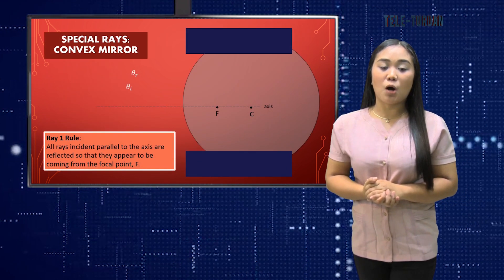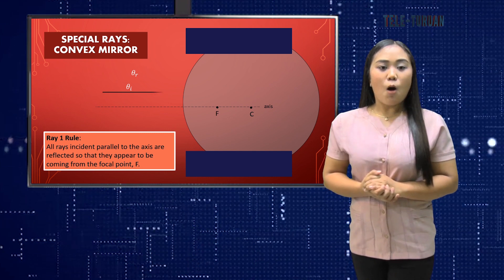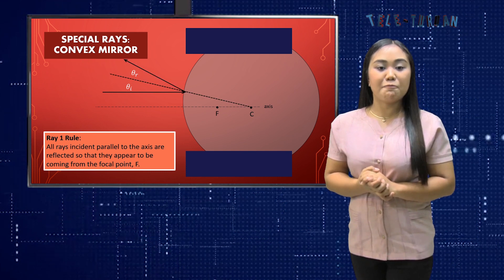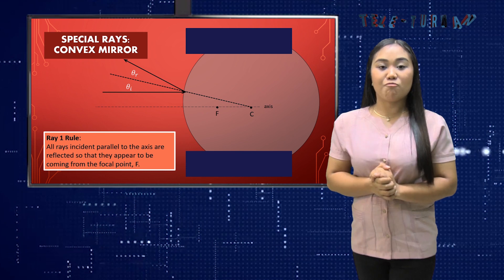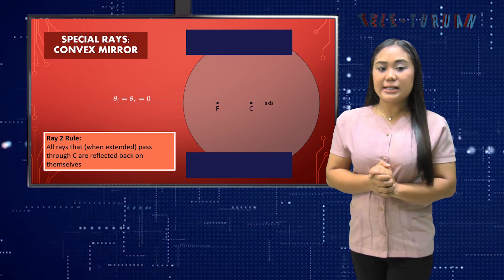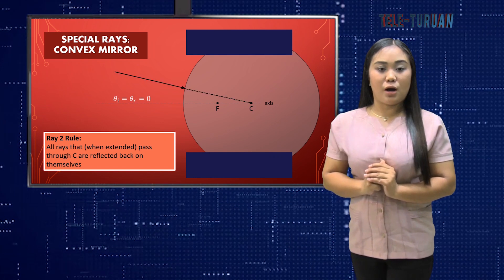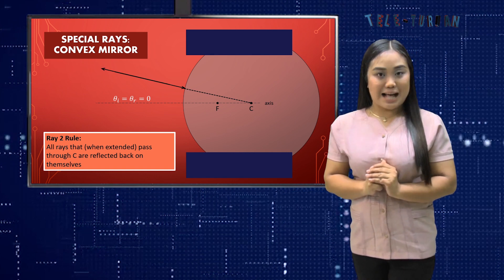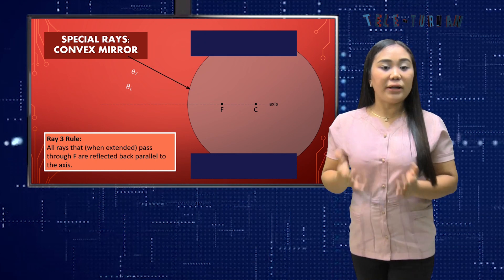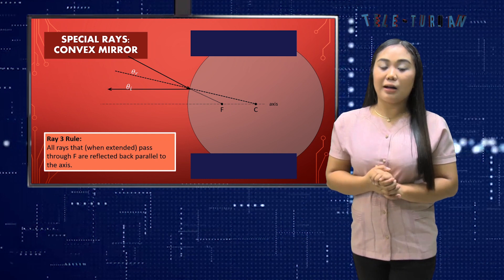Let's have the special rays for a convex mirror. Ray 1 rule: all rays incident parallel to the axis are reflected so that they appear to be coming from the focal point F. Ray 2 rule: all rays that, when extended, pass through C or the center of curvature are reflected back on themselves. Ray 3 rule: all rays that, when extended, pass through F or the focal point are reflected back parallel to the axis.